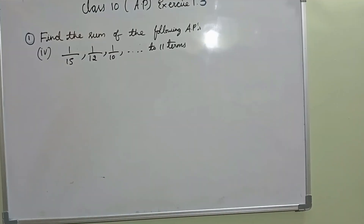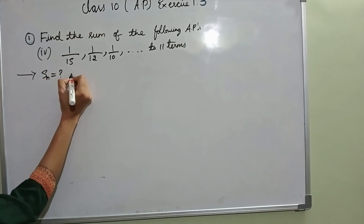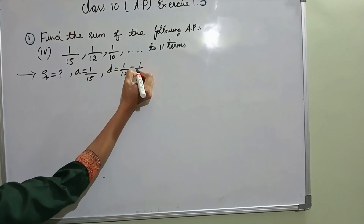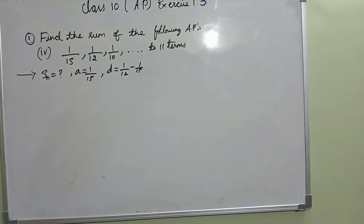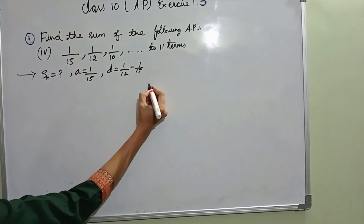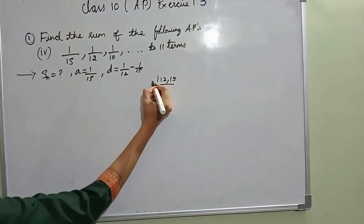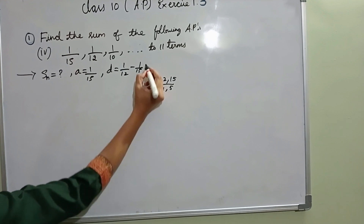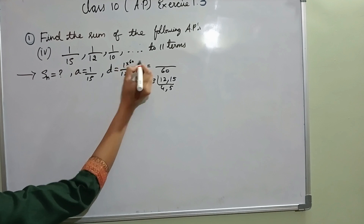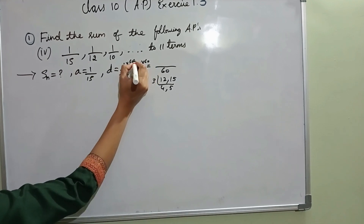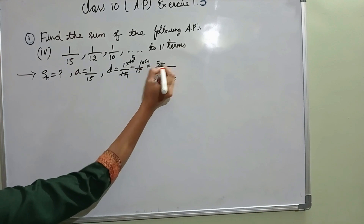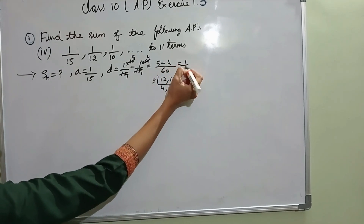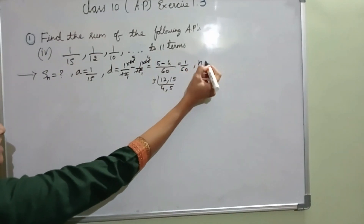Same type of problem. Here also we need to find SN, that is sum of nth term. A value is given as 1 by 15. D is second term minus first term. Since it is a fraction, we need to find the LCM of 12 and 15. LCM is 60. Multiplying both terms: 5 minus 4 equals 1 by 60. N they have given is 11.